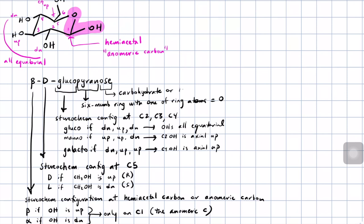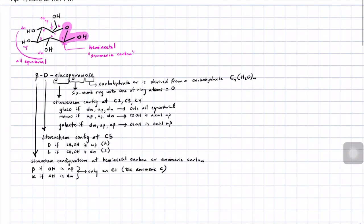Carbohydrates are molecules that have the general formula CₙH₂ₙOₙ — that's why they're called carbohydrates. As an example, for glucose the formula is C₆H₁₂O₆, and that's also the formula for mannose and galactose. So we've dealt a bit with the naming of the sugars.